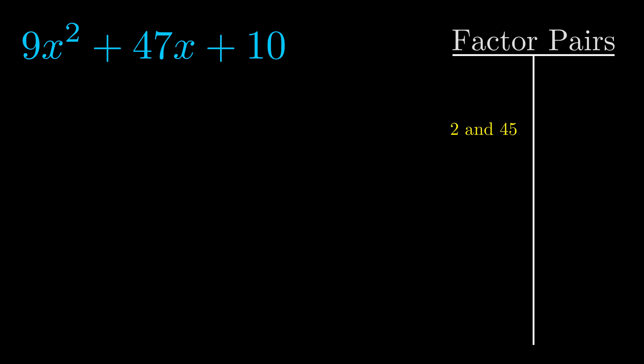Now once we have this factor pair what we want to do is we want to use it to split up the b value.